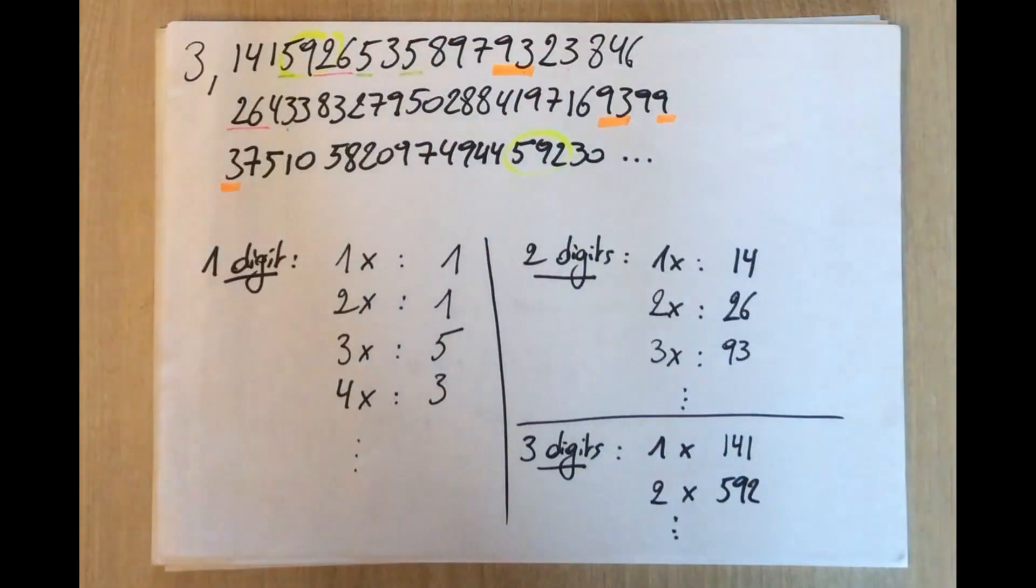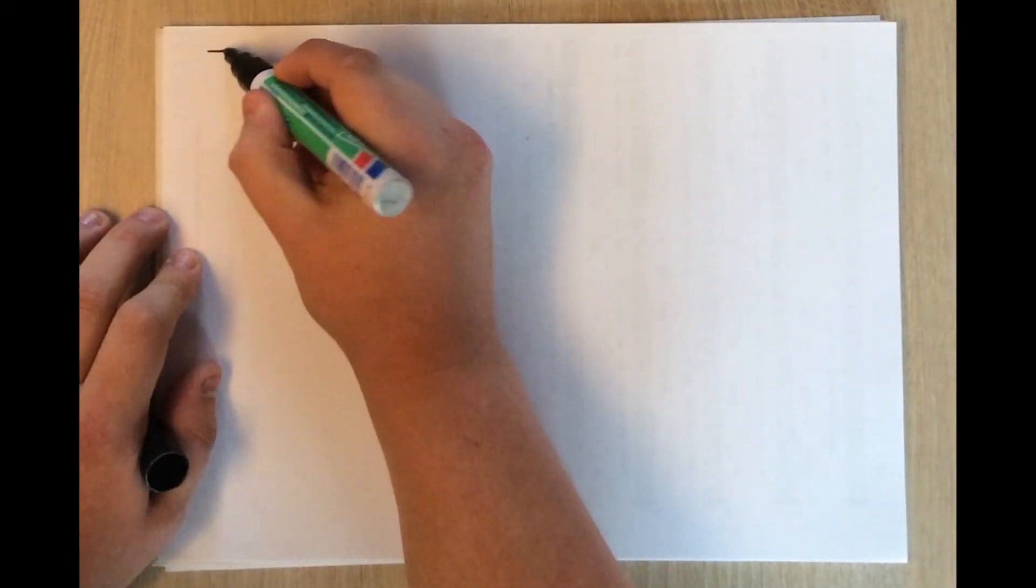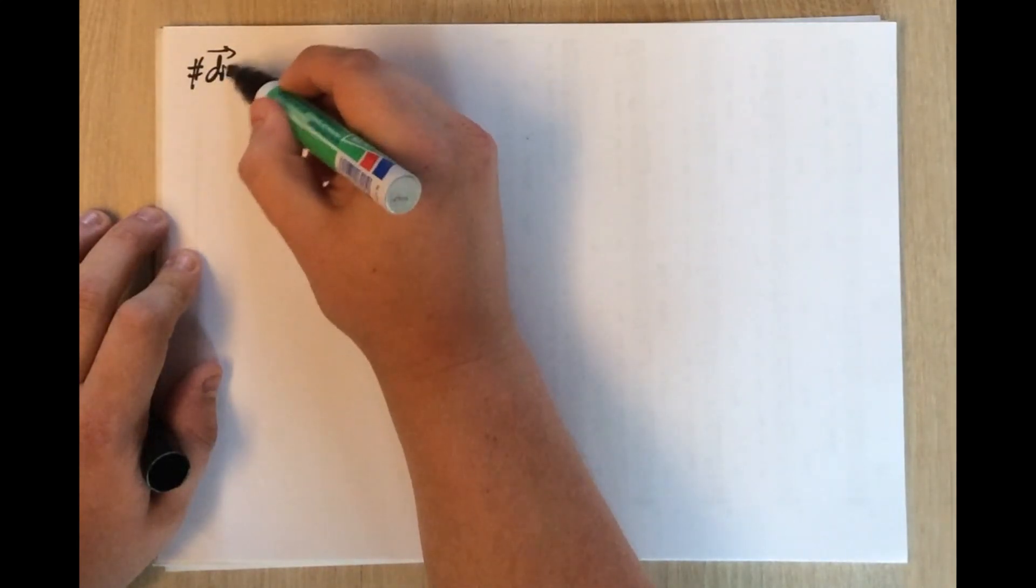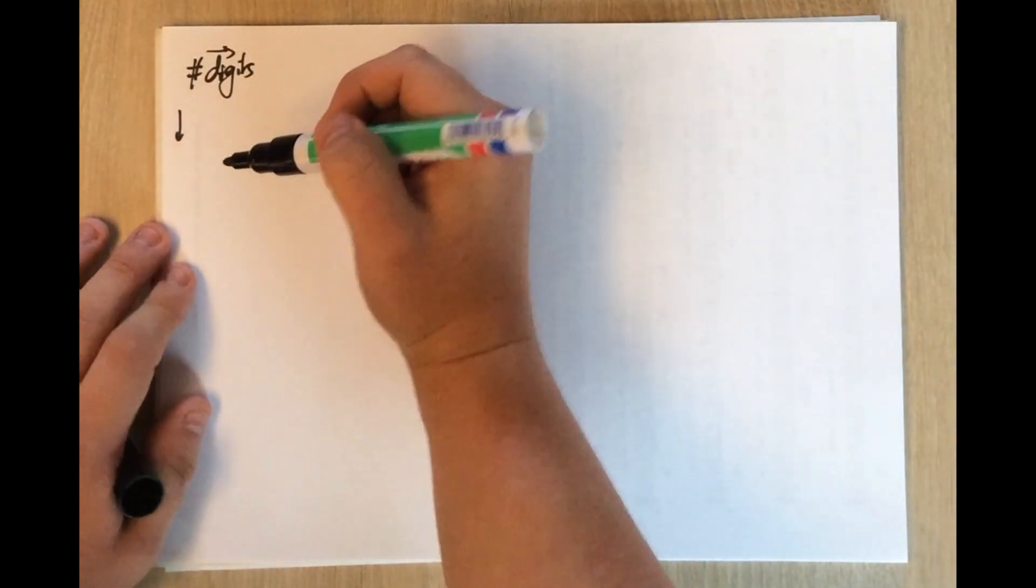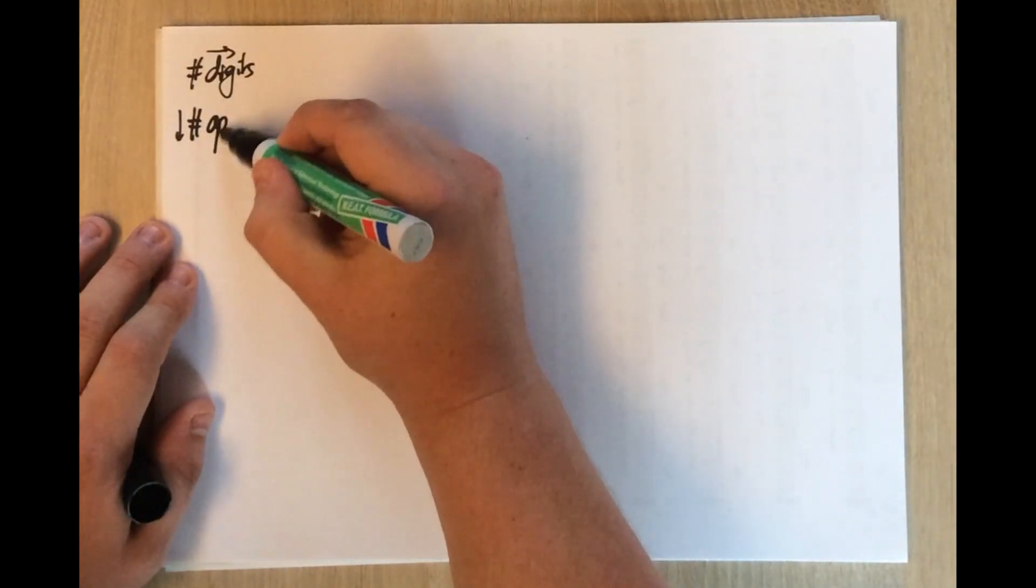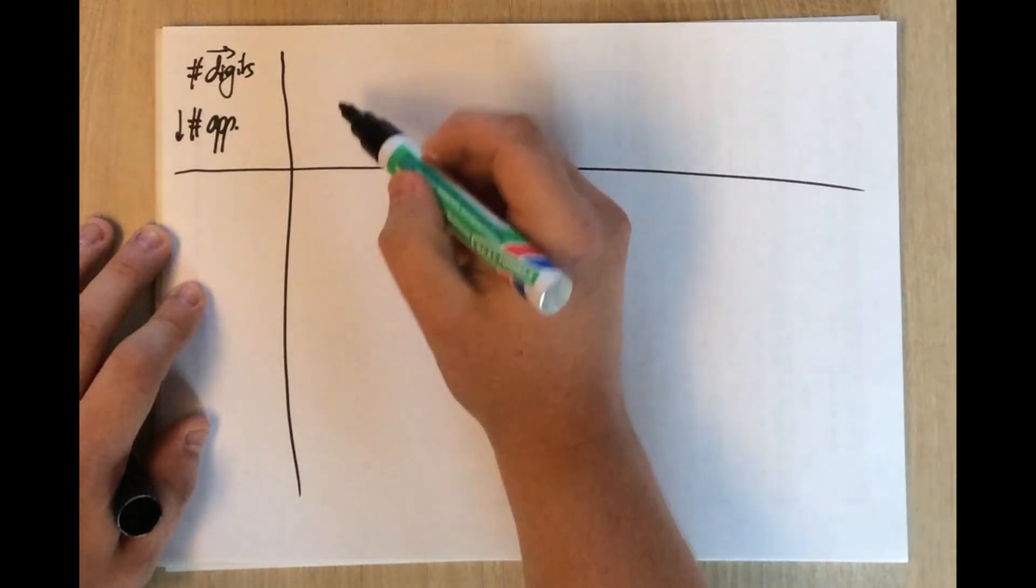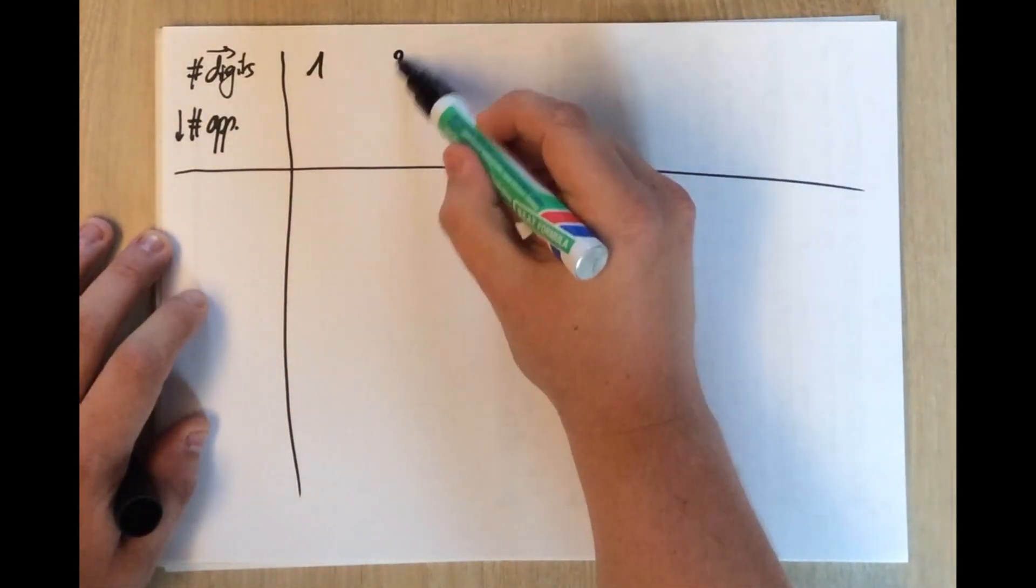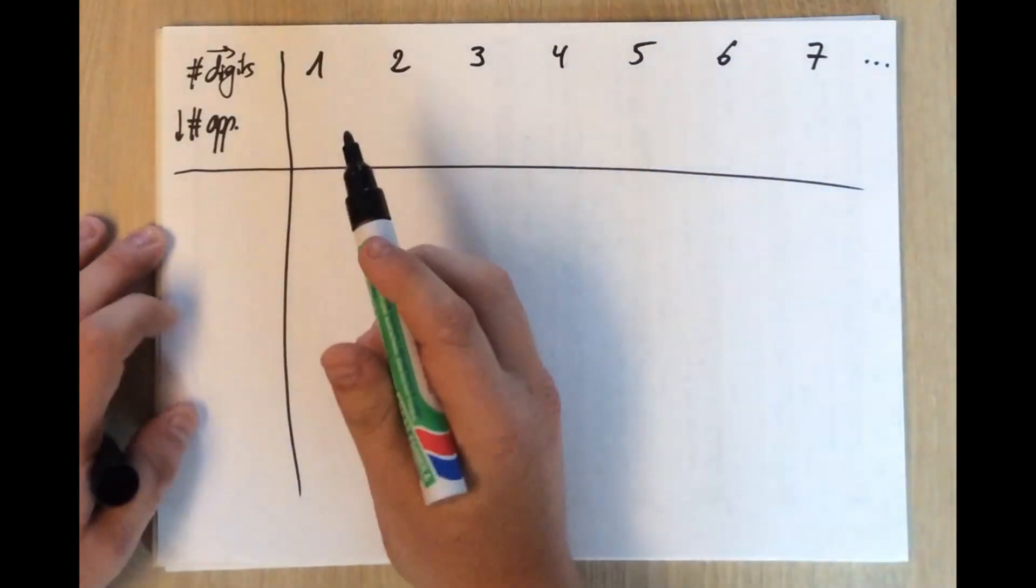So, this is the idea I'm exploring, and we can make a table. We can make a table with the number of digits on the top and with the number of appearances on the bottom. So we have number of digits: one, two, three, four, five, six, seven. And, of course, you can go on.